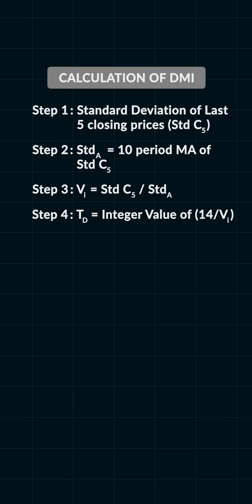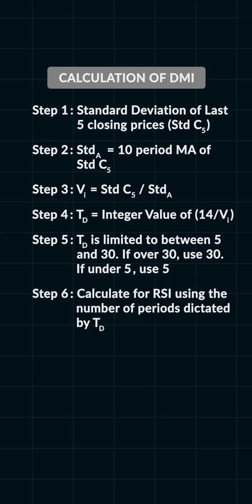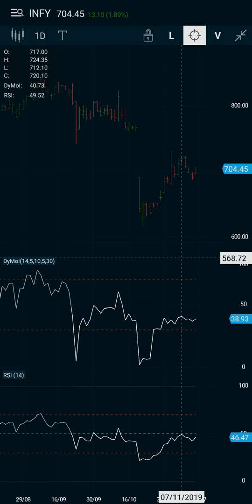We only use the integer value of these results. This TD is the time period of your Dynamic Momentum Index. TD is limited to between 5 and 30 — if over 30, we use 30; if under 5, we use 5. TD is how many periods are used in the RSI calculation, and RSI is then calculated using the number of periods dictated by TD.